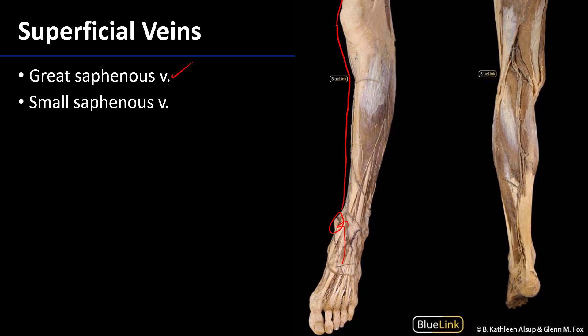The small saphenous vein arises from the posterior aspect of the lower limb, and it is going to dive deep into the popliteal fossa where it drains into the popliteal vein.